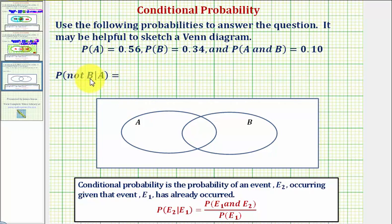to find this conditional probability, we need to find the probability of A and not B, divided by the probability of A.